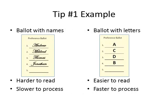Look at the difference between a ballot with names and a ballot with letters. Handwritten names are often difficult to decipher, which slows the counting process. Capital letters are easier to read, which speeds the counting process.